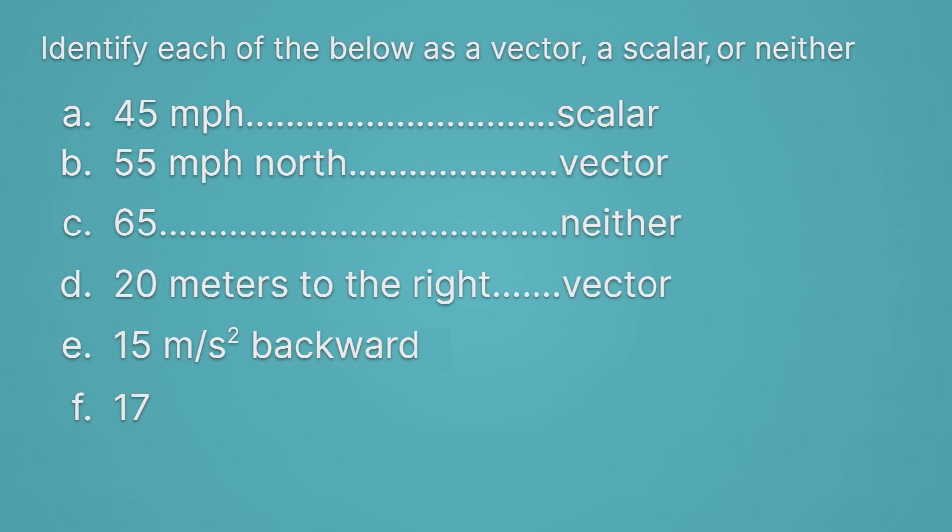Okay, on E we have 15 meters per second squared backwards. Notice, once again, size, 15. Units, we have meters per second squared. That's maybe a weird unit, but it's a unit. And the direction, backwards. That makes that a vector.